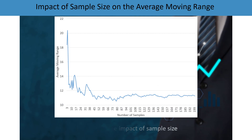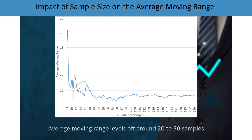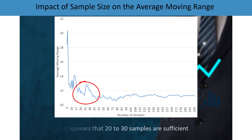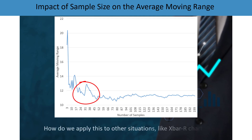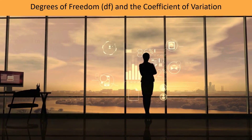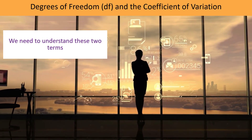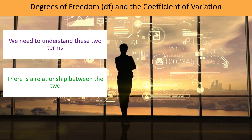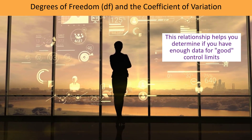Here's a chart showing the impact of sample size on the average moving range — there's quite a bit of variation early on, but once you get into the range of 20 to 30, it begins to level off. It appears that 20 to 30 samples are probably sufficient to give good control limits, as long as the process is in control. To apply this to other situations — not only individuals but also the X-bar and R chart — we need to understand two terms: degrees of freedom and coefficient of variation.